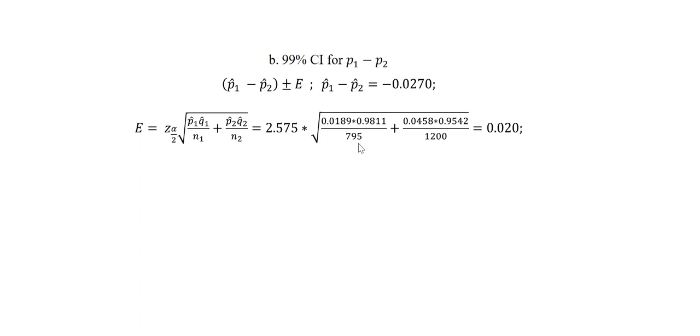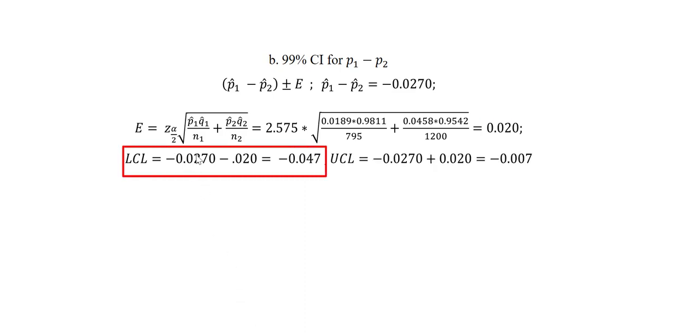Once we put all of these values together into the equation we get the margin of error. After getting the margin of error we can compute the lower confidence limit by taking the difference between P1 hat and P2 hat minus the margin of error. This gives us the lower confidence limit. The upper confidence limit will be obtained by taking the P1 hat minus P2 hat plus the margin of error. Once we have got these two values we can write down our confidence interval in this way.